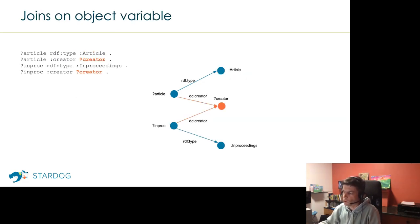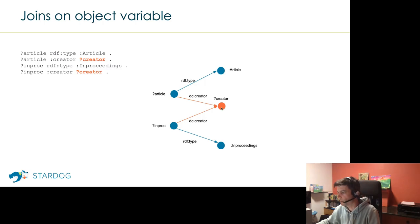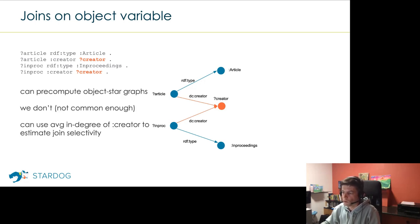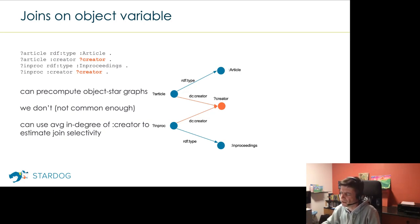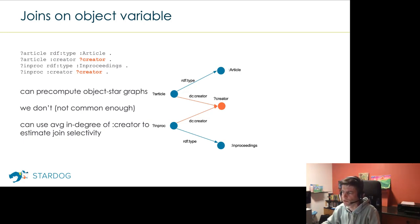What we do is augment every subject star pattern we pre-compute with a sketch — that's the improvement over the characteristic sets approach. Those bound objects can occur at the end of any predicate, but we only compute one sketch per star-shape pattern. The reason this works is that in real life, most property ranges are disjoint: if you have a business object with a bunch of attributes, in most cases they have more or less disjoint ranges. So we can get away with only one sketch per SSG. For the join on the object variable — finding articles and proceedings papers written by the same person — we use the average in-degree for the creator predicate, which works reasonably well.